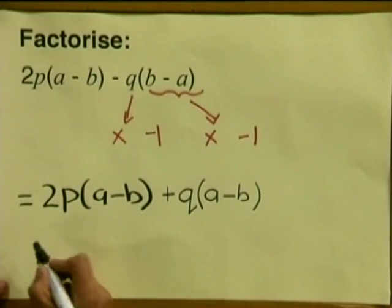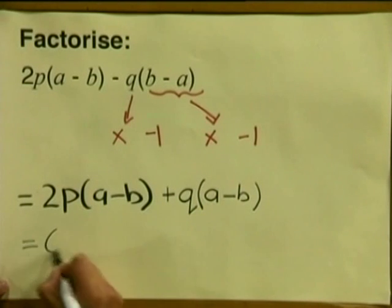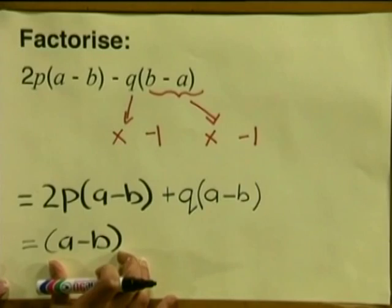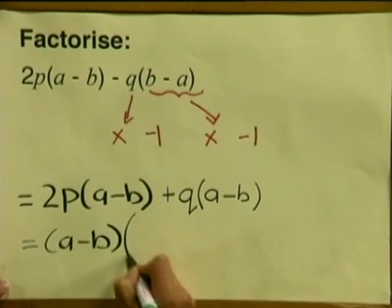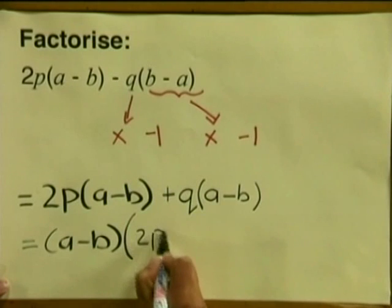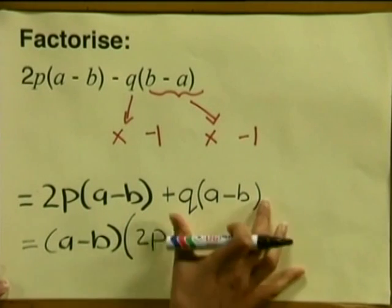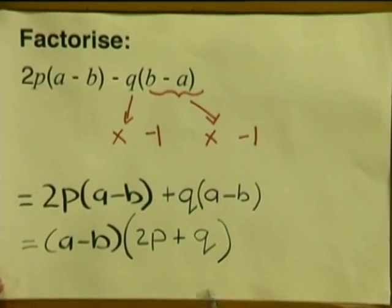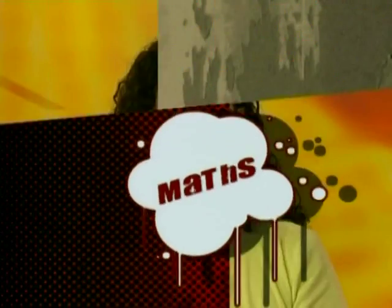Remember, taking out means to divide. So we take out our a minus b and then divide each term by a minus b. A minus b into our first term, we are left with 2p. A minus b into our second term, we are left with q. And that is our final answer. That was an example of factorizing using the principle of changing the sign.